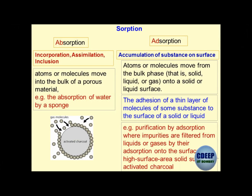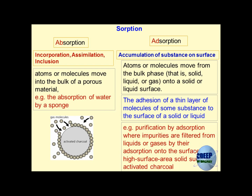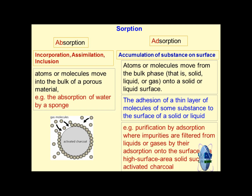By dictionary meaning, absorption is incorporation, assimilation, or inclusion of something into a matrix — the matrix being the pores and particles. However, adsorption is accumulation of a substance on the surface only — that is the main difference. For sorption you have to have a surface. Once the contaminant enters the pores of the porous media, the first phenomenon is absorption, and later adsorption may start. Put together, these two constitute sorption.